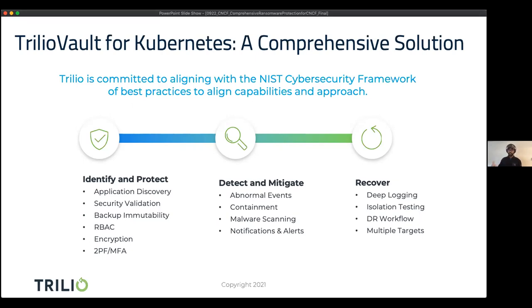You need to understand that immutability and encryption come with a cost. If you're going to encrypt everything and have multiple point-in-time copies, consider the additional cost. If cost is not the concern, make everything immutable and encrypt everything so you know it's safe. But practically, you'll always want to understand which data is not that critical and doesn't need an immutable backup or encryption. Role-based access control through zero trust is also provided — everything in the Trilio system is based on role-based access from a zero trust architecture perspective.